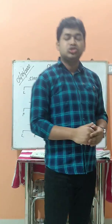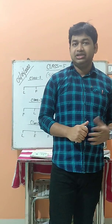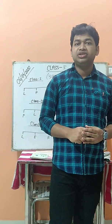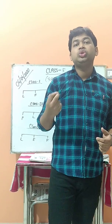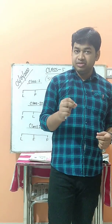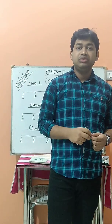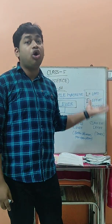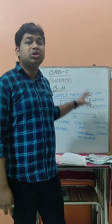As you know, last day I already discussed starting a new chapter — Chapter 11, known as Simple Machines. I discussed the definition of a simple machine, the two types of simple machines, and why we need them. A simple machine is a type of machine that helps us do our work very easily. Today we are going to discuss the types of simple machines. Machines are simple and complex.